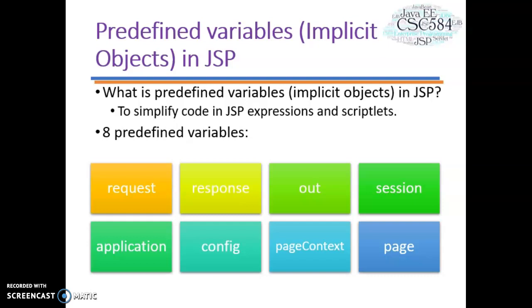Let's start with Predefined Variables, or Implicit Objects, in JSP. You can use variables in JSP to simplify code in JSP expressions and scriptlets. You are supplied with eight automatically defined variables, sometimes called Implicit Objects.